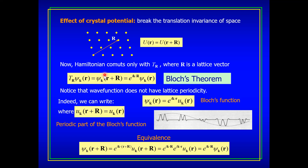I can also prove that both statements of Bloch's theorem are equivalent. I calculate ψ_K(r + R) using the second form, writing R + big R. Since u is a periodic function, u_K(r + R) = u_K(r), and factoring out e^{i K·R}, I recover the first form: the wave function translated by a lattice vector equals the same wave function multiplied by a phase factor. So both statements of Bloch's theorem are equivalent to each other.